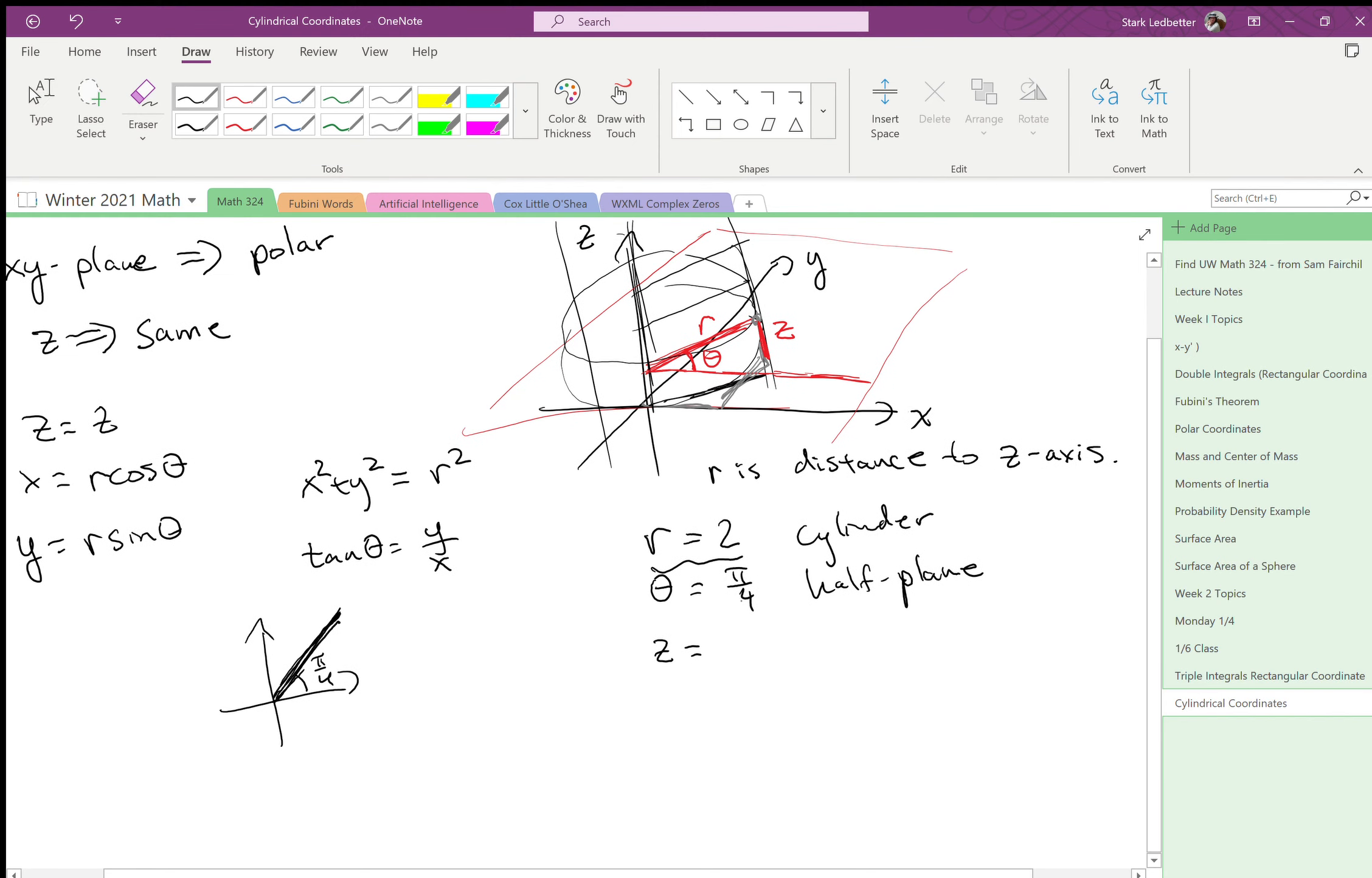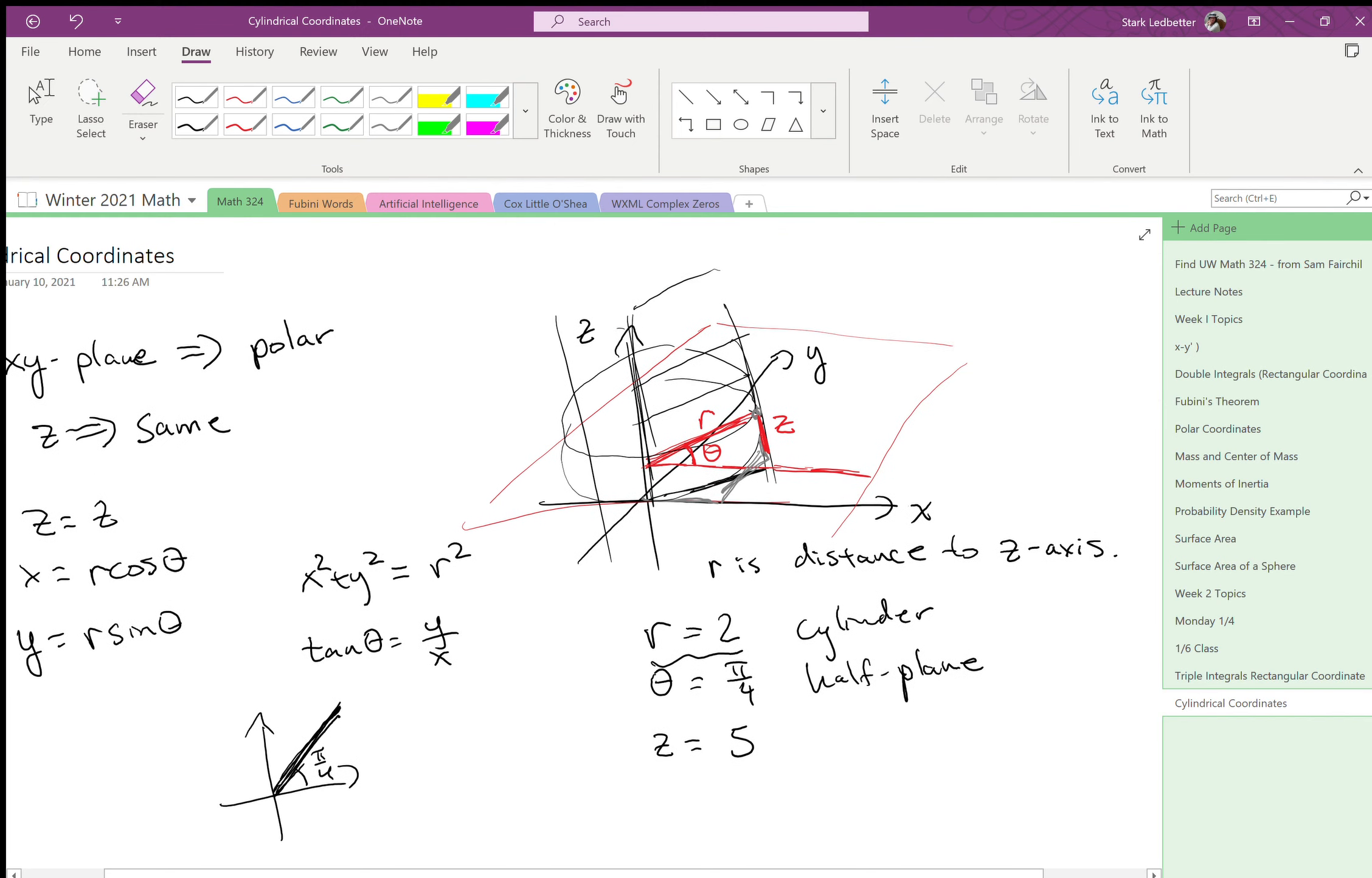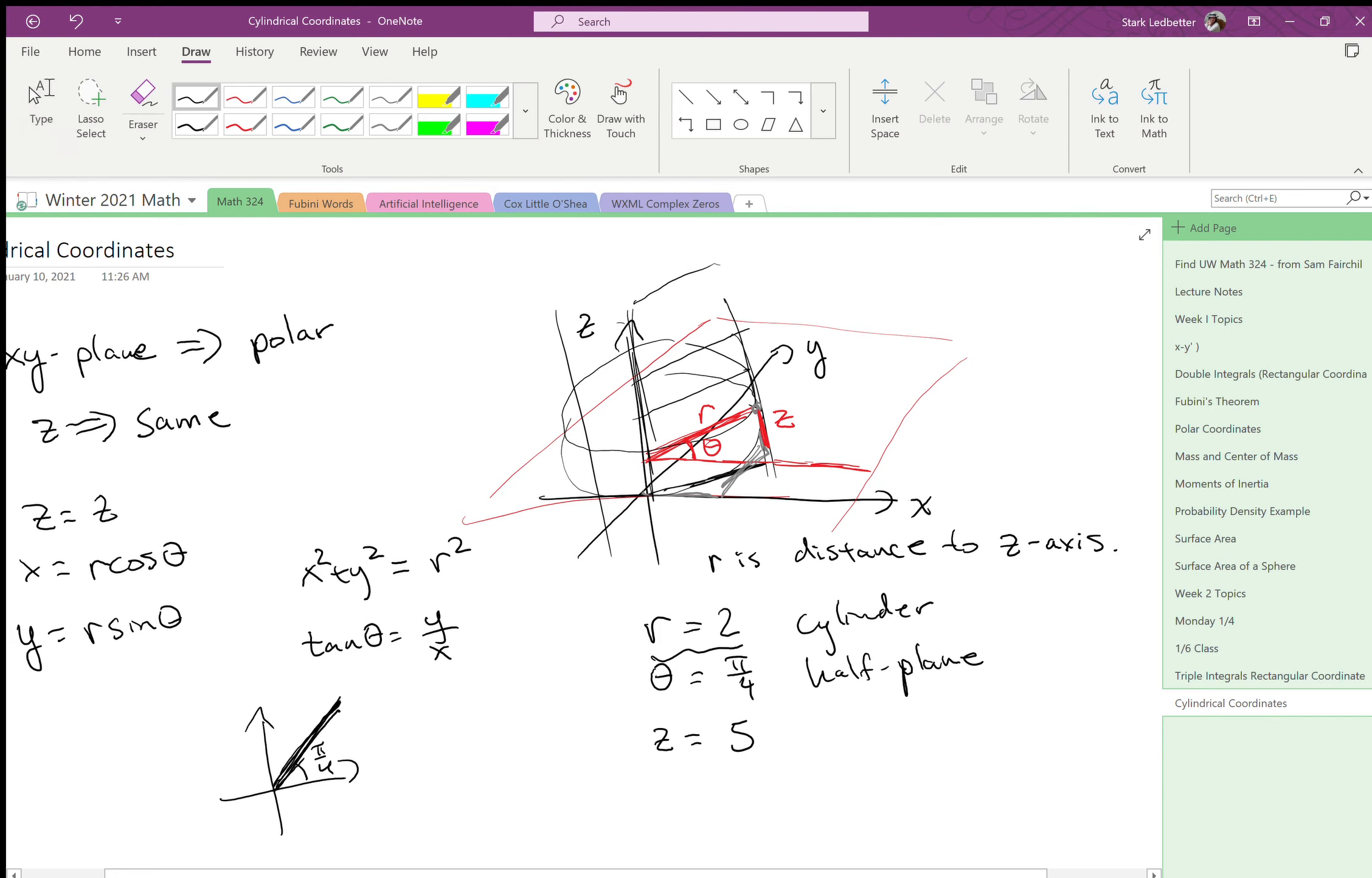And then finally z equals, let's say, five. Well, that hasn't changed, right? Z equals five, we just go up to five, and we get a horizontal plane that cuts the z-axis at the point five.